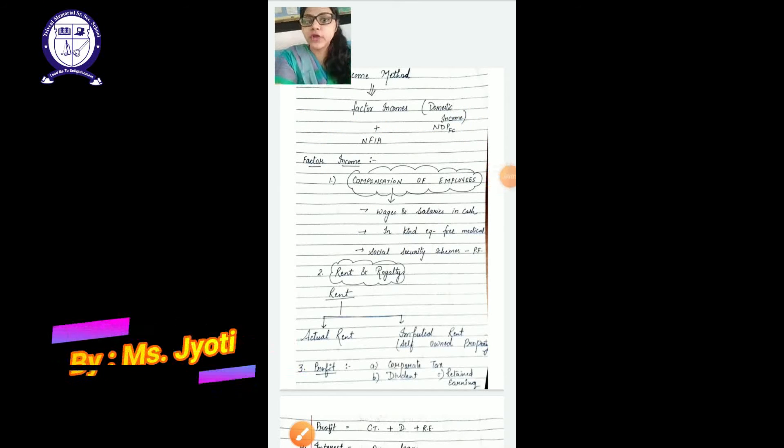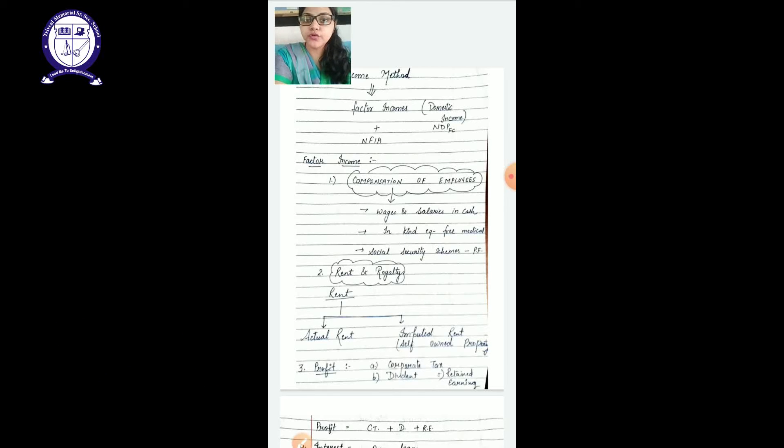Good morning class, today we are going to start our new method, that is your income method. In income method, basically we have to define two things: first one is your domestic income, and after that we have to find your NFIA, that means net factor income from abroad.